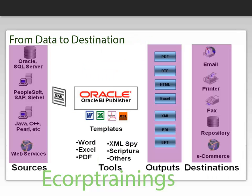From Data to Destination: An Oracle BI Publisher report can consist of one or more sources that feed a template created by any supported method. The resulting output of the report can be sent to one or more outputs and distributed to one or more destinations.